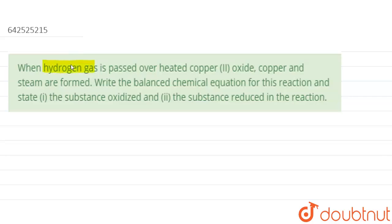hydrogen gas is passed over heated copper(II) oxide, copper and steam are formed. Write the balanced chemical equation for this reaction and state (i) the substance oxidized and (ii) the substance reduced in the reaction.